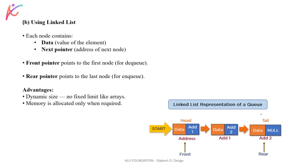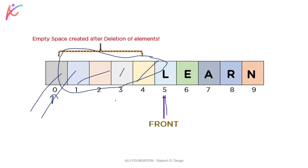Now let's see the queue using a linked list. A linked list has nodes with two parts: data and a next pointer. Data stores the actual value, and next pointer stores the address of the next node. In a linked list queue, we maintain two pointers — front and rear. Front pointer points to the first node and rear pointer points to the last node. The advantage is dynamic size — no fixed limit like arrays.